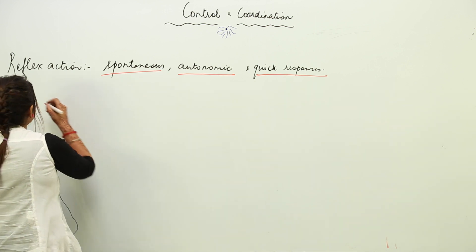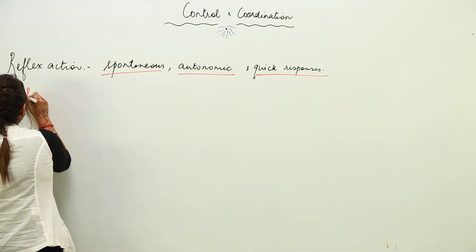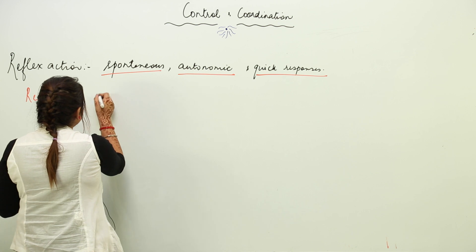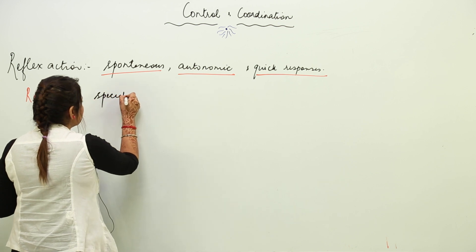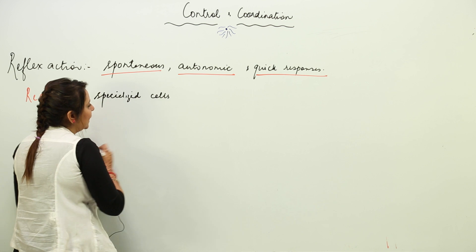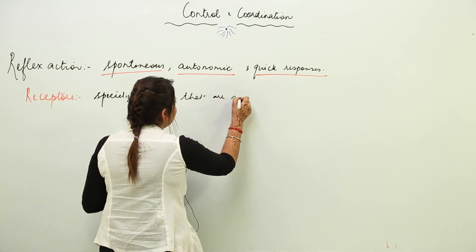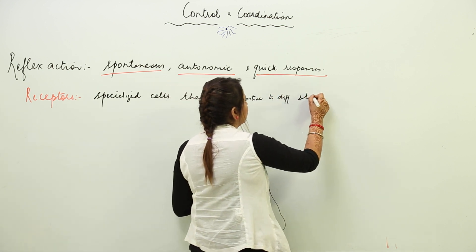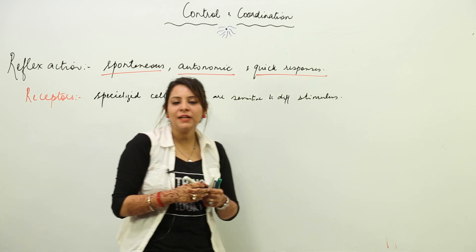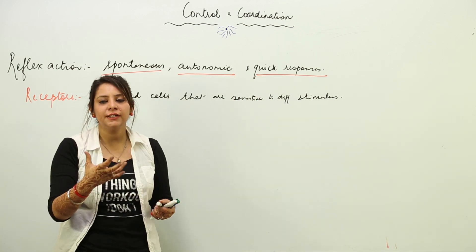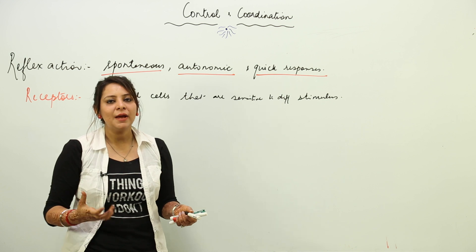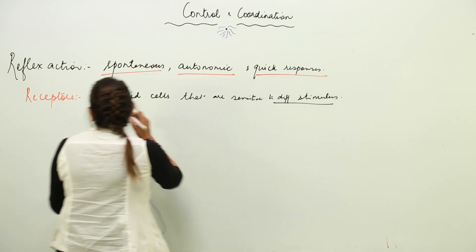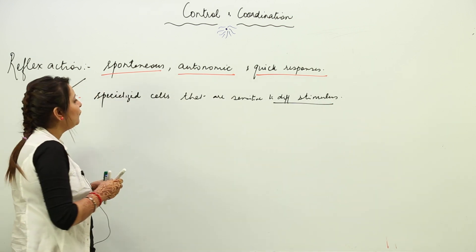Now, how does a reflex action actually occur? We have receptors — specialized cells that are sensitive to different stimuli. A stimulus is any change in the surrounding environment. The cells which are sensitive to different stimuli are called receptors, and we have many kinds of receptors.